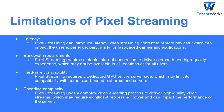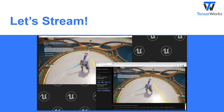Hardware Compatibility — Pixel Streaming requires a dedicated GPU on the server side, which may limit its compatibility with some cloud-based platforms and servers. Encoding Complexity — Pixel Streaming uses a complex video encoding process to deliver high-quality video streams, which may require significant processing power and can impact the performance of the server. With all of this in mind, let's move on to a demonstration of Pixel Streaming in action, using the Pixel Streaming showcase shipped with Unreal Engine 5.2.